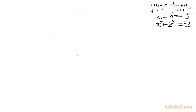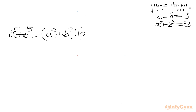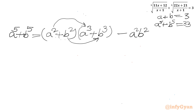Now I will solve this new system of equations: a plus b equals 3, and a⁵ plus b⁵ equals 33, using algebraic identities. So I can write a⁵ plus b⁵ as (a² plus b²) times (a³ plus b³), then I have to subtract the cross product terms: a²b³ plus a³b². So minus a²b²(a plus b).